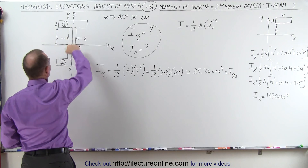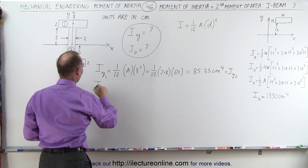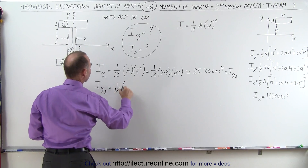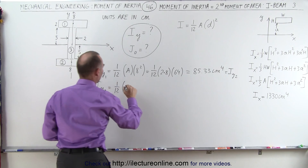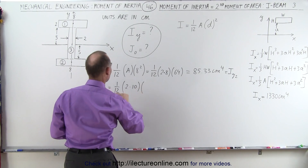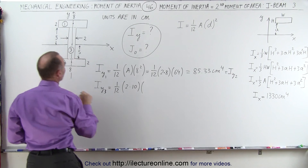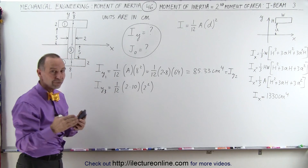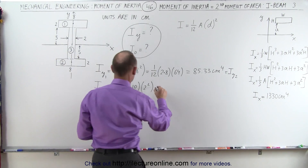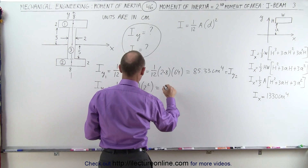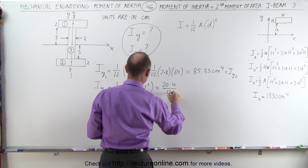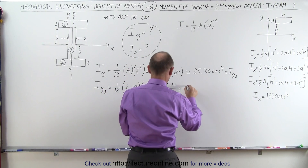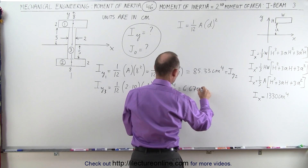Now we still need to find the moment of inertia of section 3, which should be a very small quantity. I_y for the third section is equal to 1/12 times the area, which is 2 by 10, or 2 times 10, times that total distance squared, which is 2 squared. It's a small quantity because there's not a lot of area far away from the axis of rotation. This equals 20 times 4 divided by 12, so 80 divided by 12, which gives 6.67 centimeters to the fourth power.